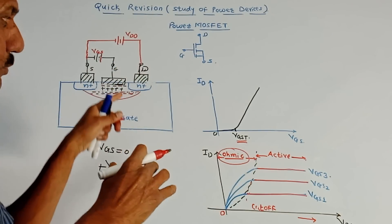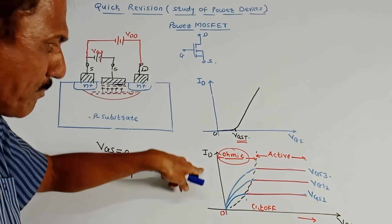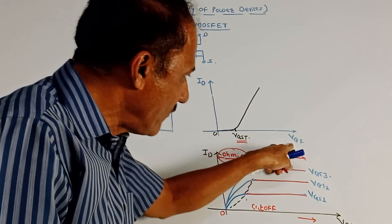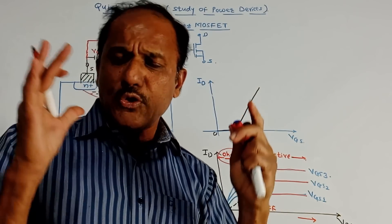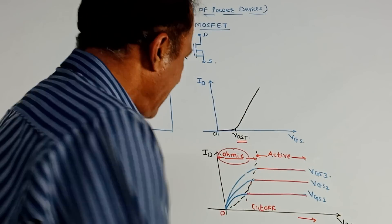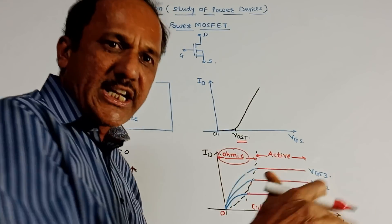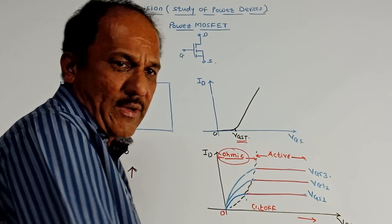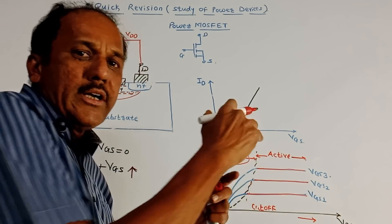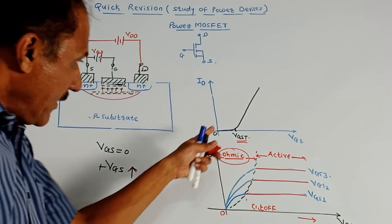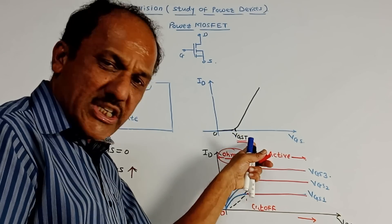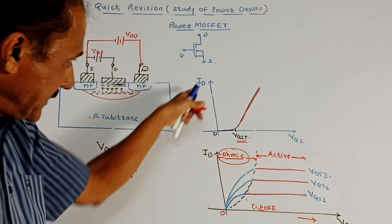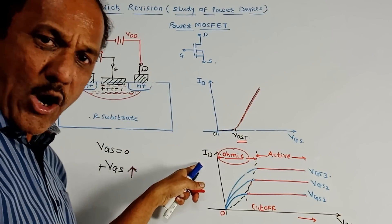This is how the power MOSFET operates. The transfer characteristic is the graph of drain current ID versus VGS. There is a particular threshold value VGST: if VGS is below this threshold, the device does not conduct. Once VGS exceeds VGST — the threshold level — conduction starts. This is the transfer characteristic.